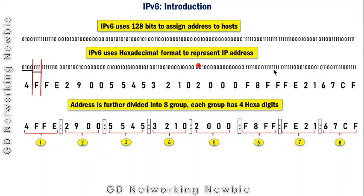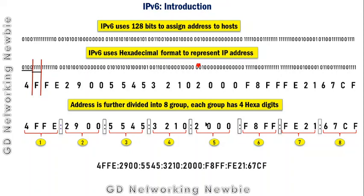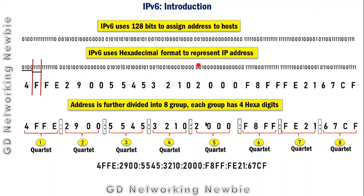All groups are separated by a colon sign. This gives the final human-readable form of the IPv6 address. Each group of 4 hexadecimal digits is known as a quartet. So a single IPv6 address has 8 quartets. In summary: an IPv6 address has 128 bits, 32 hexadecimal digits, and 8 quartets.